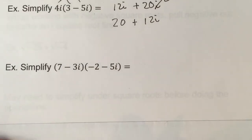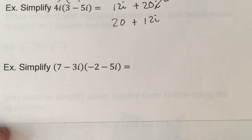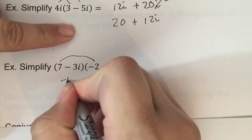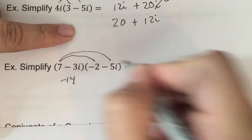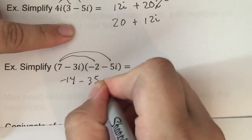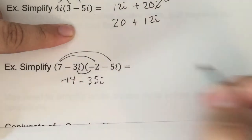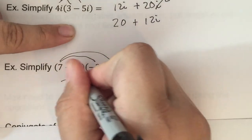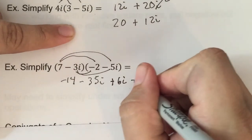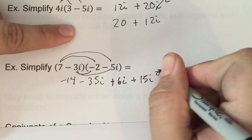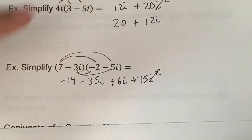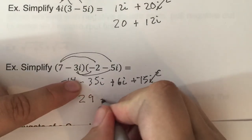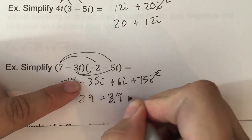When multiplying two binomial complex numbers, we FOIL: 7 times negative 2 is negative 14; 7 times negative 5i is minus 35i; negative 3i times negative 2 is plus 6i; and negative 3i times negative 5i is plus 15i squared, which flips the sign to negative 15. Combining: negative 14 and negative 15 give negative 29, and negative 35i plus 6i gives minus 29i.